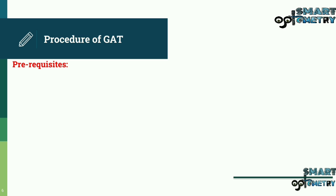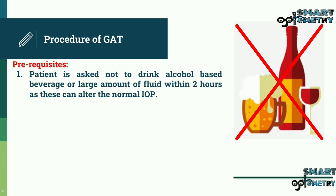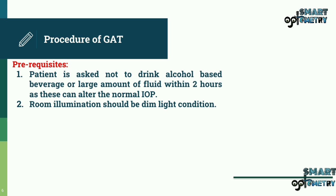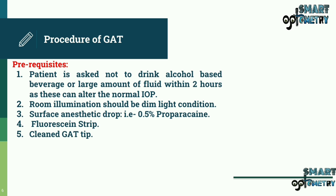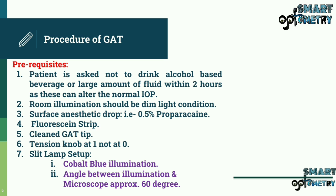Prerequisites for the procedure: the patient is asked not to drink alcohol-based beverages or large amounts of fluid within two hours, as these can alter normal intraocular pressure. Room illumination should be dim. Surface anesthetic drops — 0.5% proparacaine — and fluorescent strip are needed. The tension knob should be set at 1 and not at 0.